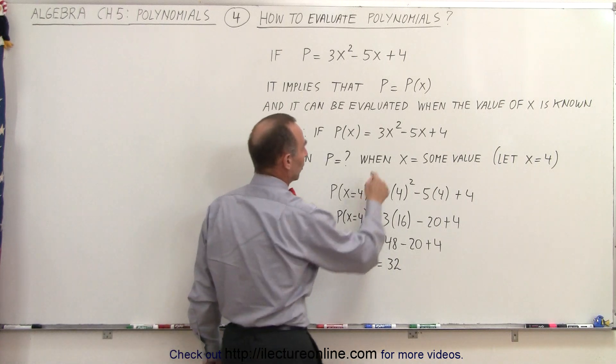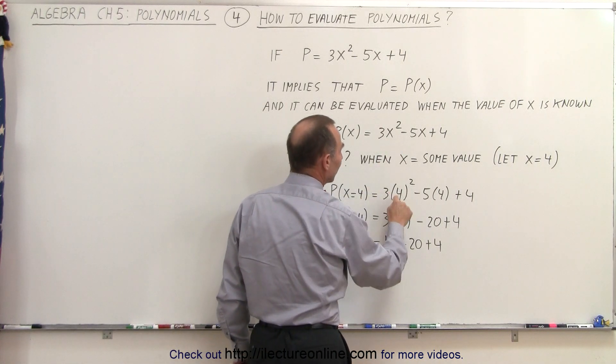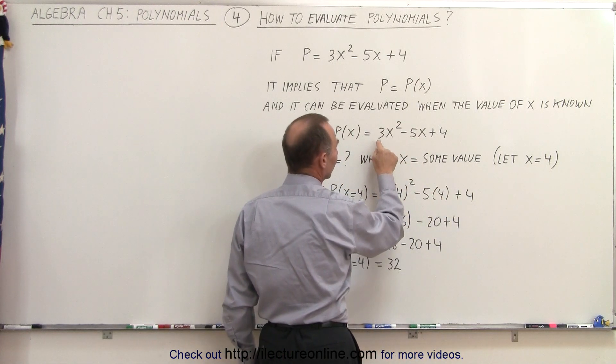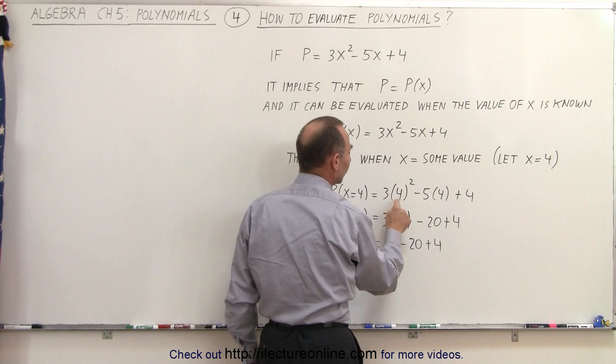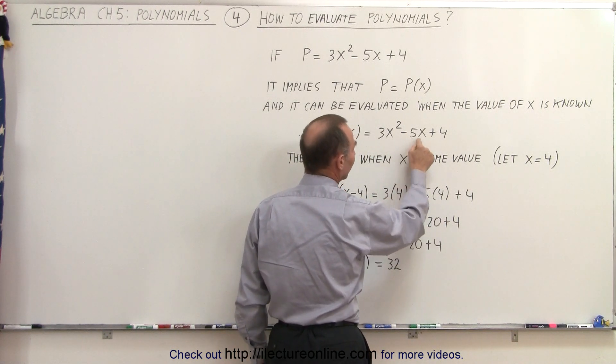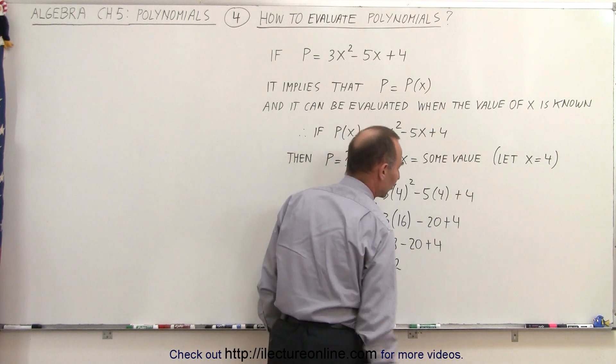So, what we're going to do is replace every x by the value of that variable x, in this case the number 4. So, this becomes, instead of 3x squared, 3 times 4 to the second power minus 5 times 4 instead of minus 5 times x. And, of course, we still have the plus 4 at the end.